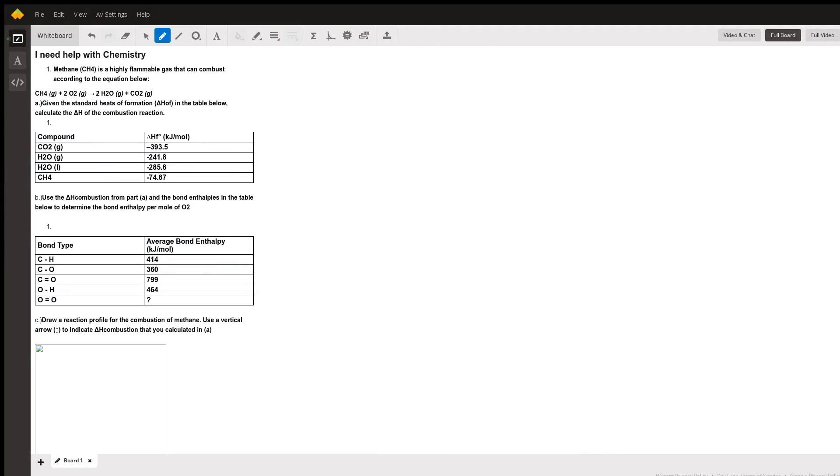Good afternoon. So you need to calculate the delta H for this chemical reaction. The delta H for the chemical reaction is standard enthalpy of formation of products minus standard enthalpy of formation of reactants.